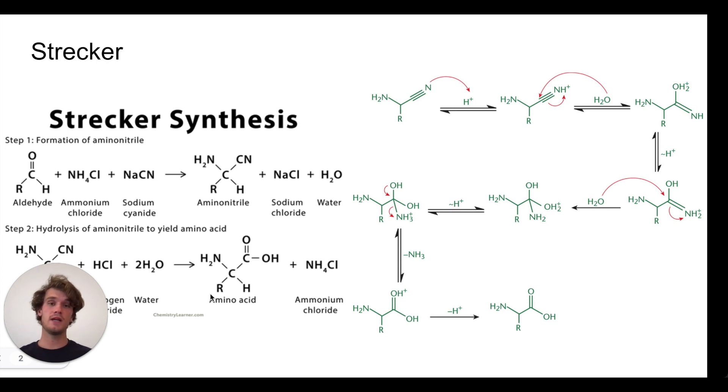The other important thing to know is these mechanisms produce racemic mixtures of both the L and D enantiomers of amino acids. And so if you want a pure product, you're going to have to perform additional steps.